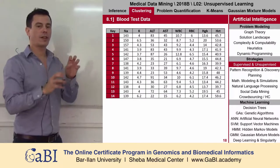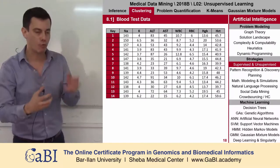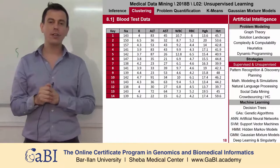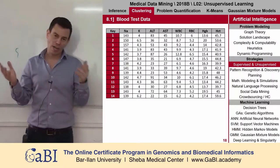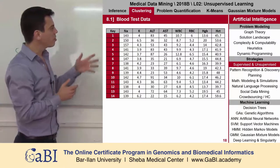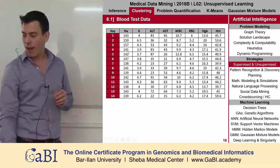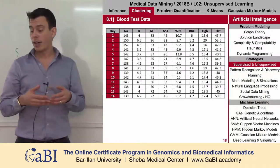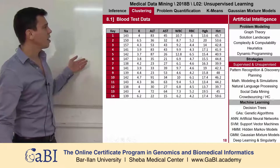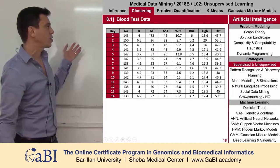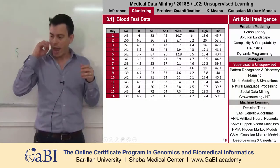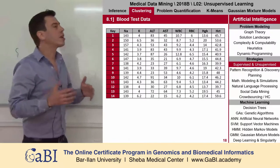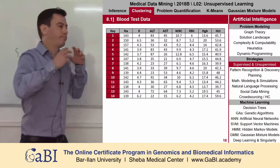In this example we have a very tiny EMR — electronic medical record. In our clinic we have only 14 patients, as you can see in this table. For each patient we have different variables measured in their blood: white blood cells, red blood cells, potassium, ALT, ST, hematocrit, and so on. What we want to do is ask: do we see some kind of trends, patterns, groups, or families in this community?